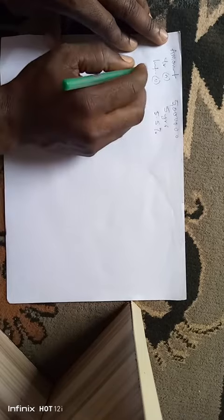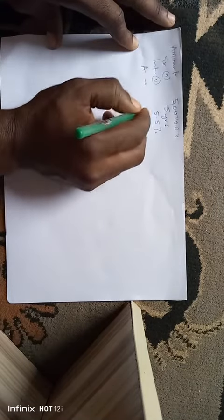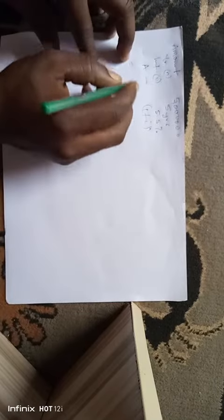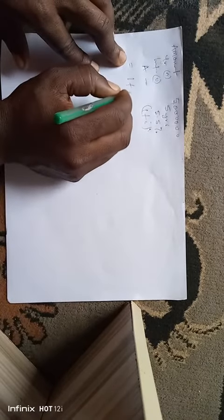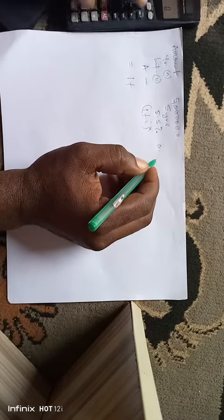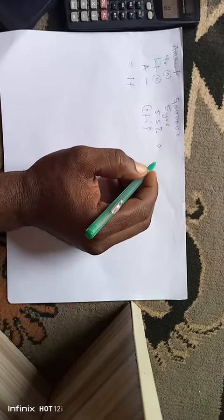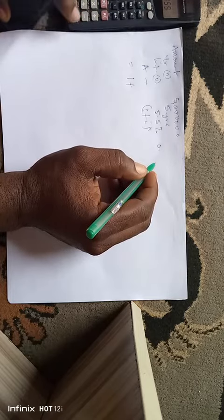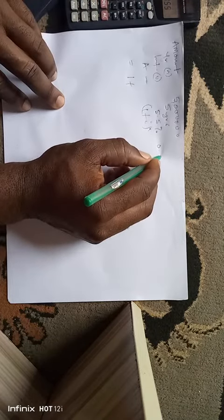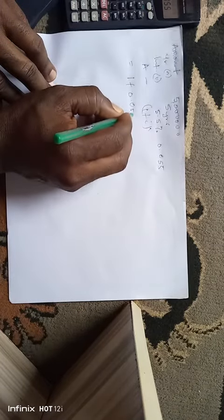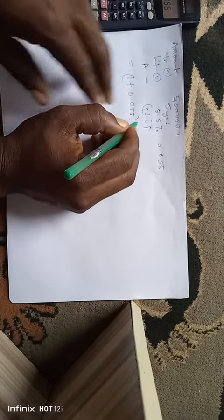I want to analyze 1 plus i raised by n, which equals 1 plus our i is 5.5%. 5.5 divided by 100, which is 0.055. 1 plus 0.055 raised to power n is 5 years.